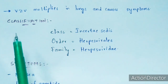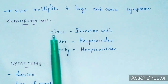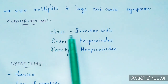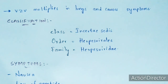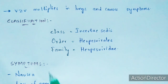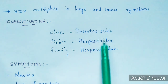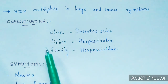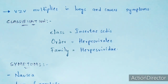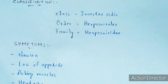Coming to the classification, the varicella zoster virus belongs to one of the eight herpesviruses that infect humans. It belongs to the family Herpesviridae, the order Herpesvirales, and the class Insecticides.